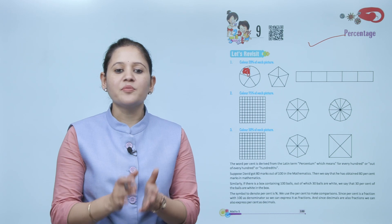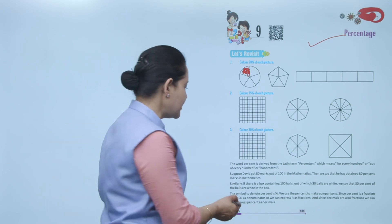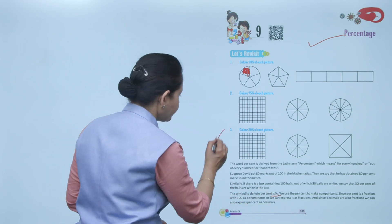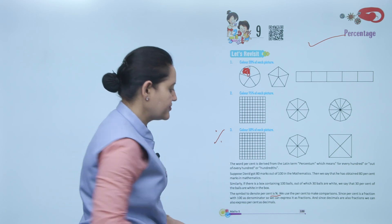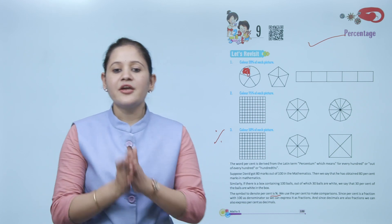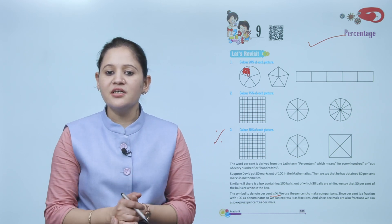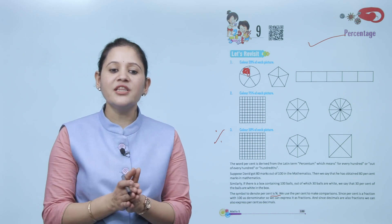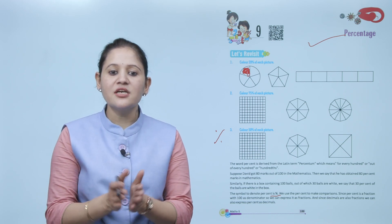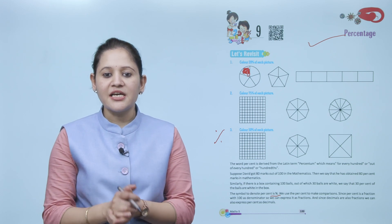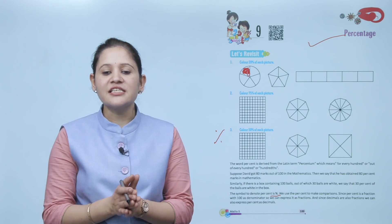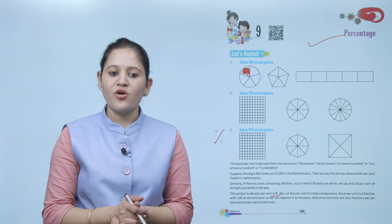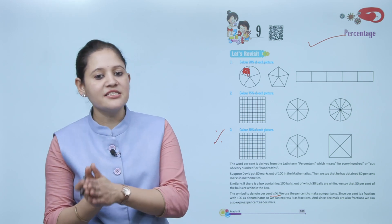The symbol used to denote percentage is '%'. We use percentage to make comparisons. Since percent is a fraction with 100 as the denominator, we can express it as fractions. And since decimals are also fractions, we can also express percent as decimals.